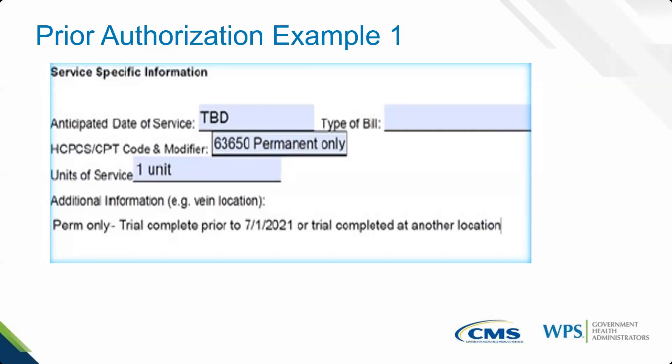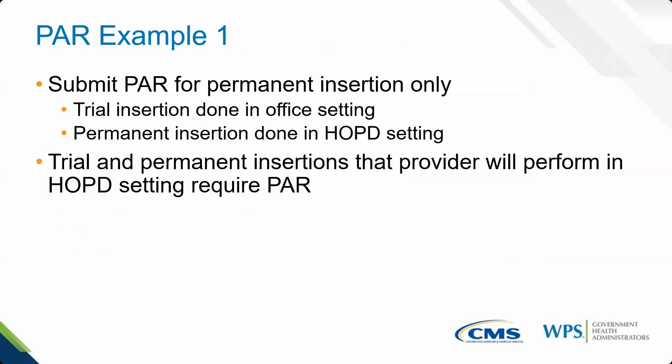Example one involves a facility requesting the permanent placement only. The trial insertion was completed in the office setting, but the permanent insertion will be done in the outpatient setting. In this case, the prior auth is required for the permanent insertion only, since it is the only one completed in the hospital outpatient department. The trial done in the office setting does not require a prior authorization.